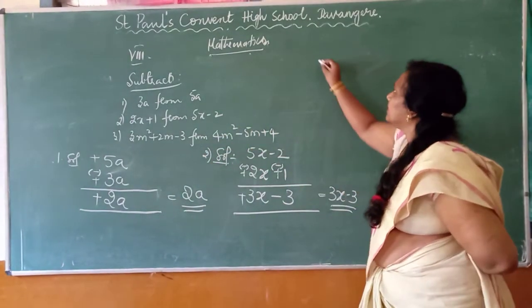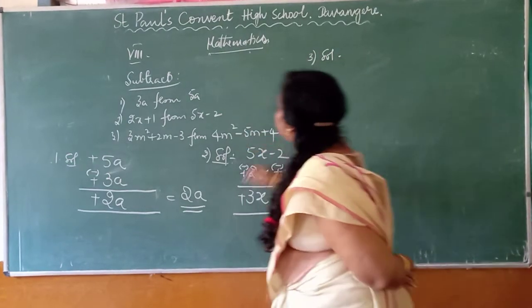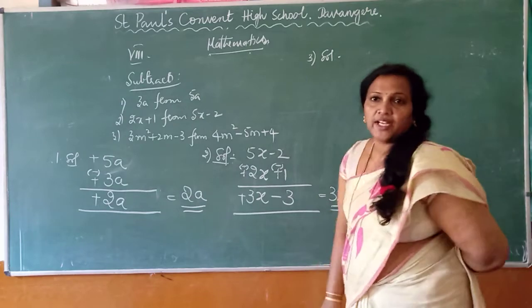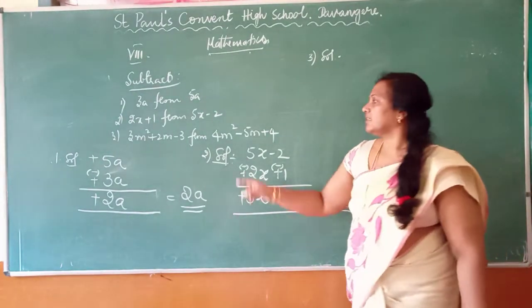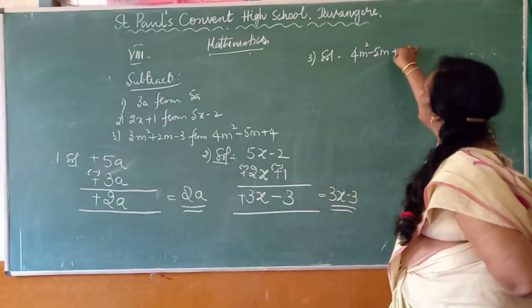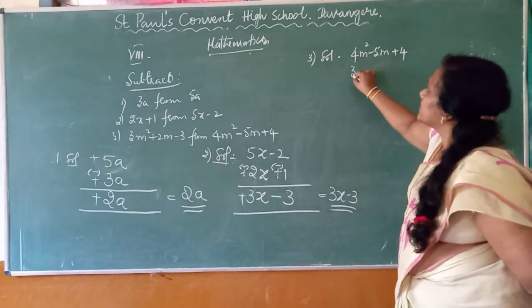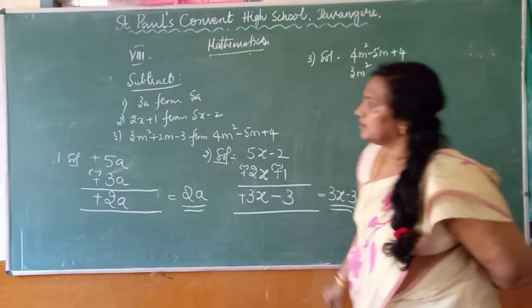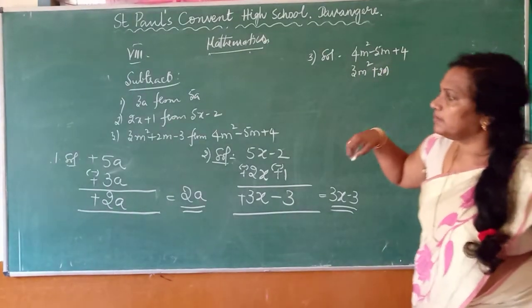Now for the third one, which one should I write first? 'From' should always be written first. So 4X² minus M plus 4, then 3X² plus 2M minus 3.